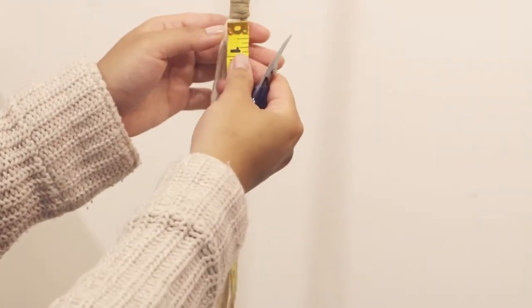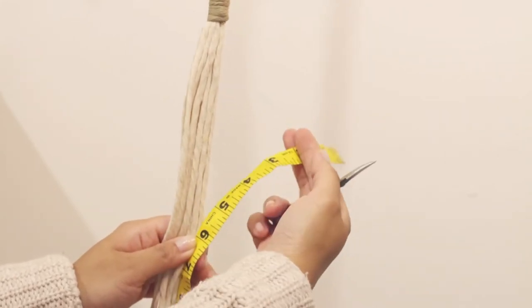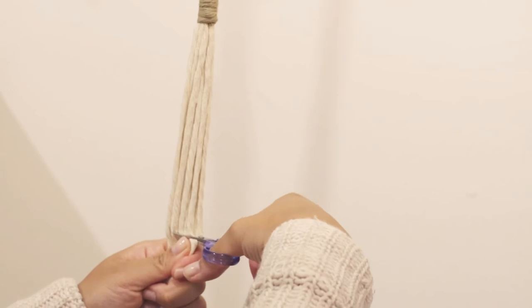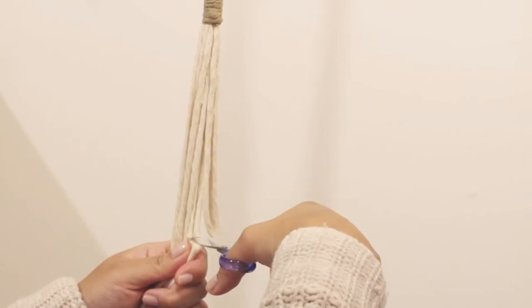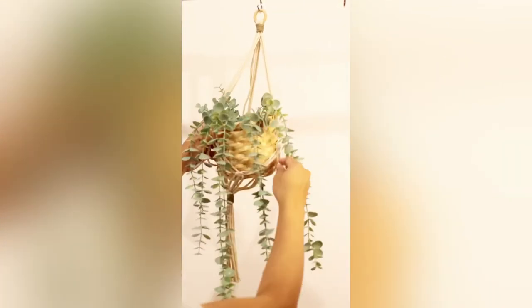Now let's finish this plant hanger off. So I want my fringe to be six inches, so it's up to you if you want it shorter or longer than that. And there you go, we have a plant hanger. Thank you.